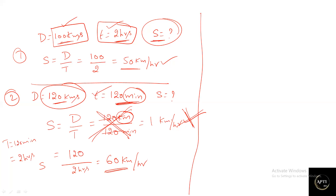We can't blindly substitute the values given in a question into the formula. It is very important to know the conversions — conversion of units is critical. In a question, they may give distance in kilometers and time in hours but ask for speed in meters per second. You need to check whether all units are in the same form, and convert units according to what the question requires.